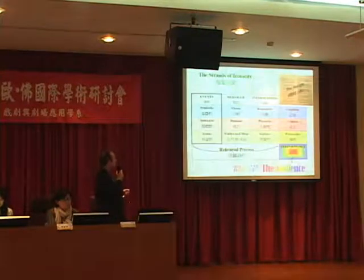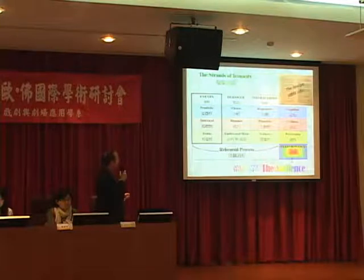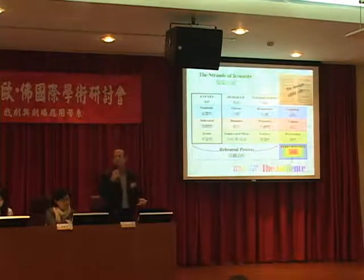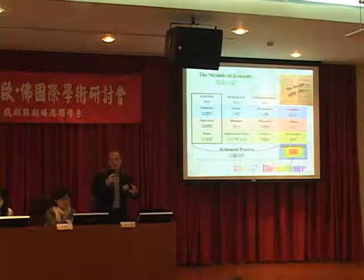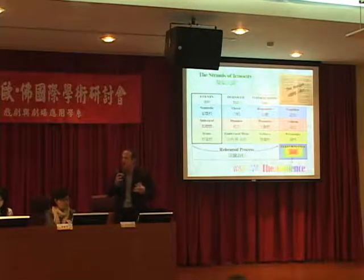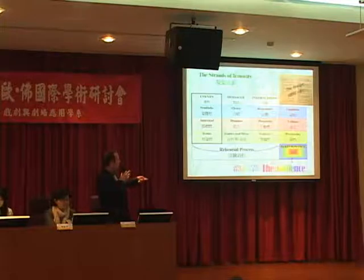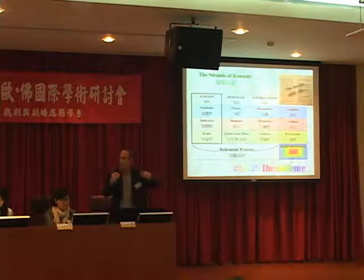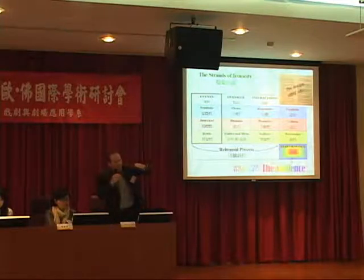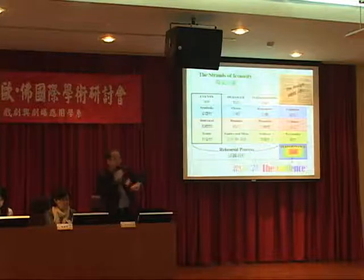The first strand of iconicity is the most important one to begin the rehearsal process with — it's called the strand of events. The strand of events is very simple: it's the learning of the story of the play. There are different kinds of events. The main kind, the indexical event, points the way through the action of the play. We follow the index from the beginning to the end of the play.